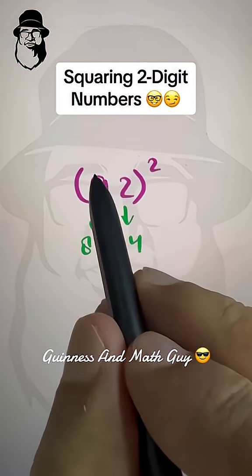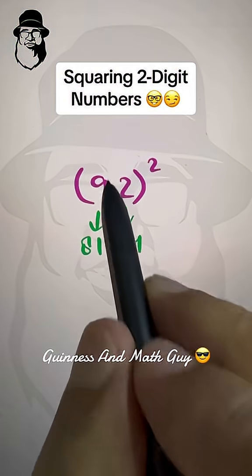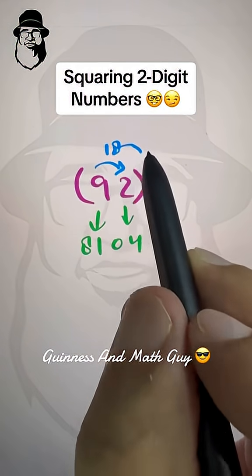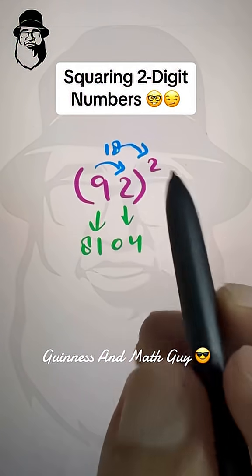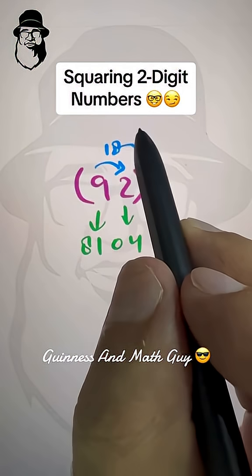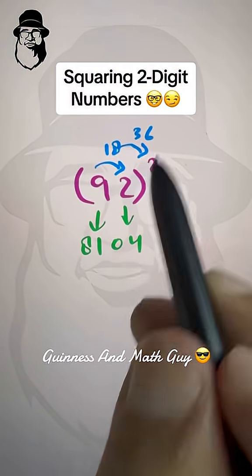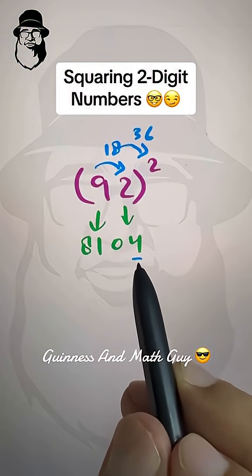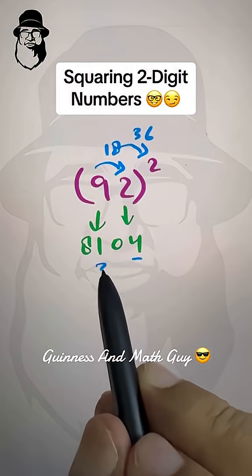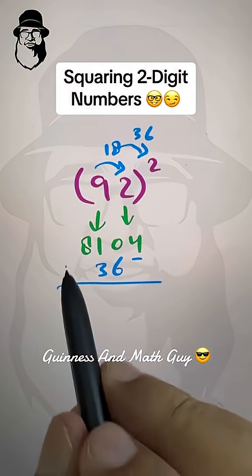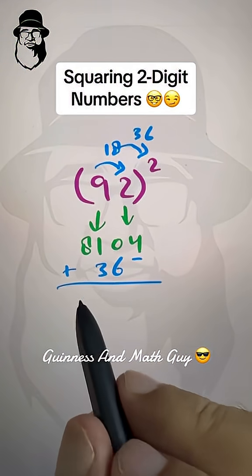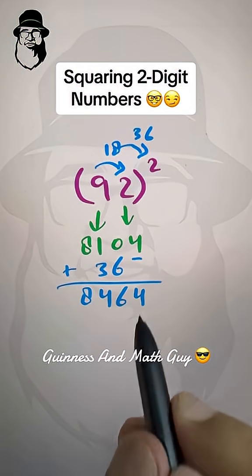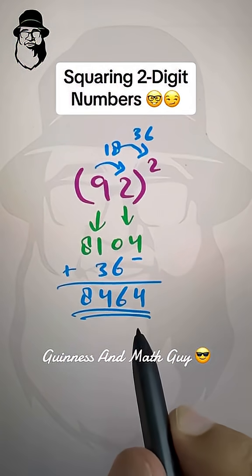Then we do the same: 9 times 2 is 18, and 18 times 2 is 36. We leave one space from the right and write 36. That's our final answer — add them: 8, 4, 6, 4 is the final answer.